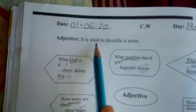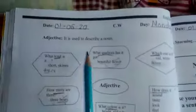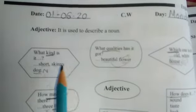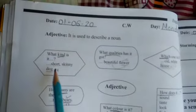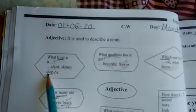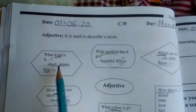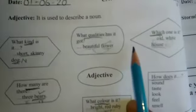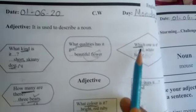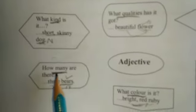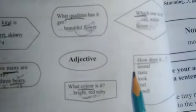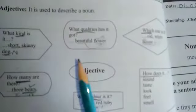Adjective. It is used to describe a noun. It actually describes the kind, quality, which one, numbers, and color of a noun. Look at the examples of the adjective. What kind is it? 'Short, skinny dog' — dog is a noun and short, skinny is an adjective describing the noun. 'Beautiful floor' — floor is a noun and beautiful is an adjective. Which one? 'Old, white house' — old and white are adjectives and house is a noun. How many? 'Three bears' — bears is a noun and three is an adjective. What color? 'Bright red ruby' — bright, red is the adjective. How does it sound, taste, look, feel, smell? Adjective describes these qualities of a noun.